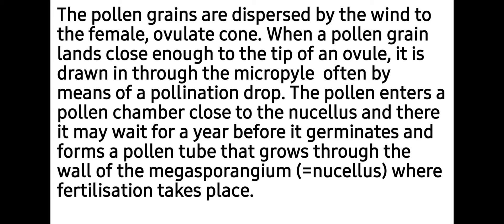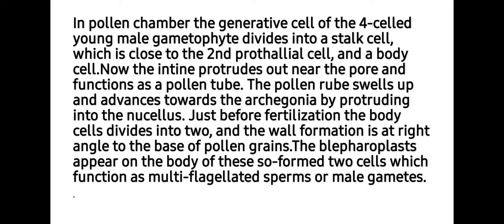The pollen enters a pollen chamber close to the nucellus and there it waits for a year before it germinates and forms a pollen tube that grows through the wall of the megasporangium where fertilization takes place. In the pollen chamber, the generative cells of the four-celled young male gametophyte divide into a stalk cell, close to the second prothallial cell, and a body cell, so finally it becomes a five-celled stage.